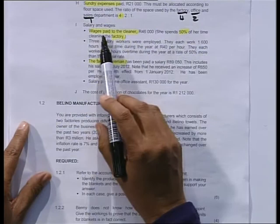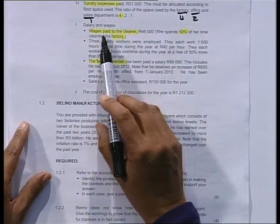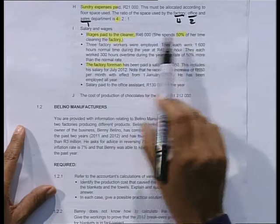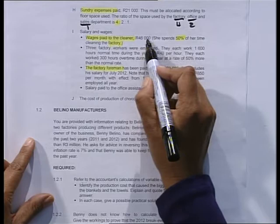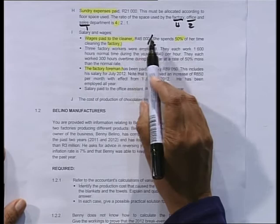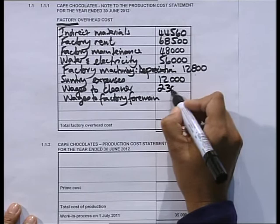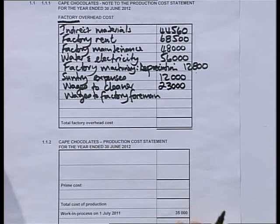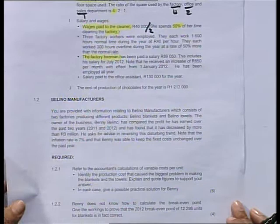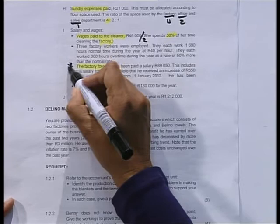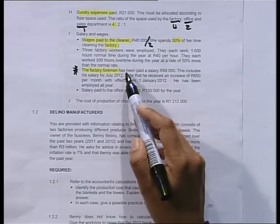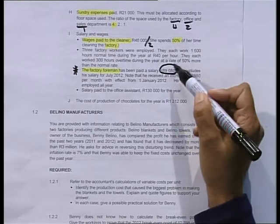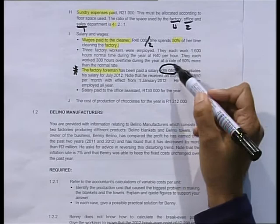For wages to the cleaner: wages paid to the cleaner are 46,000 and she spends 50% of her time cleaning the factory — that's half. So I take 46,000 and divide by 2 to get 23,000. I'm only going to allocate 23,000 to my factory because she spends half her time in the factory and the other half in the office. The factory foreman calculation is a bit of a difficult one — I'm going to read through it and explain how I'm going to approach it.